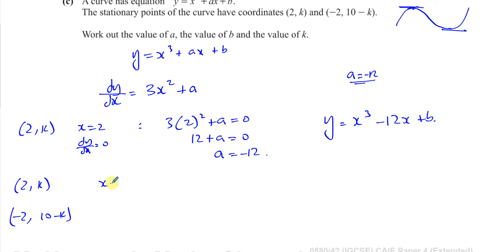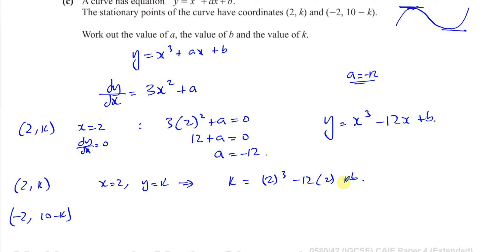When x equals 2, y equals k. Substituting into the equation: k equals 2 cubed minus 12 times 2 plus b. That gives k equals 8 minus 24 plus b, so k equals negative 16 plus b. That's the first equation.